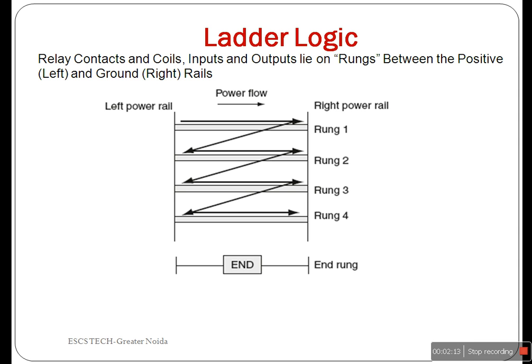Ladder logic is so named because the diagram looks like a ladder. Each step in the ladder, or program, is called a rung. The vertical lines on the left and right are the power rails. Each rung defines one operation in the control process. The ladder diagram is read from left to right and from top to bottom.